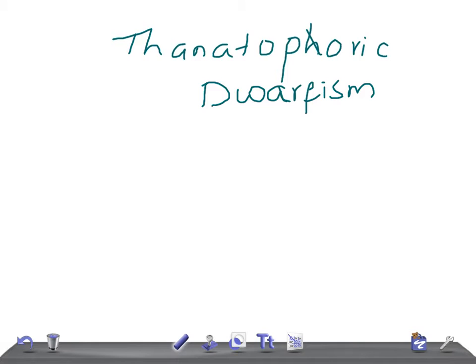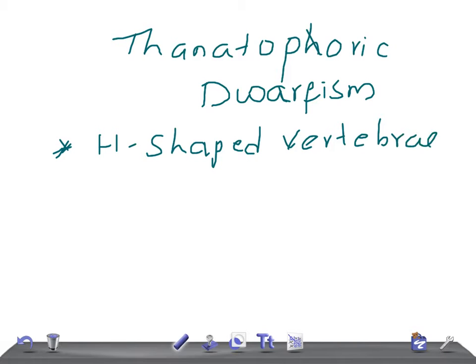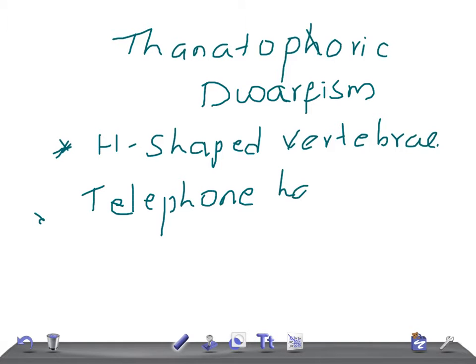Moving on to the radiological features — the most common finding is that it is a fatal neonatal dysplasia. The key radiological signs include the H-shaped vertebra, telephone handle long bones, and clover leaf skull.